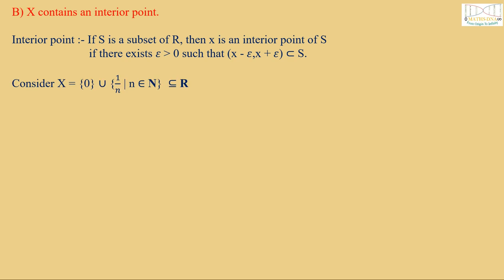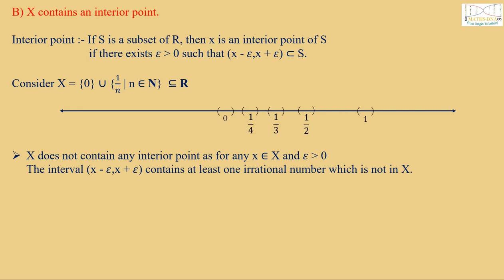Again, consider the same set X = {0} ∪ {1/n | n ∈ N} ⊂ R. We get this as a real line and X does not contain any interior point. As for any x ∈ X and ε > 0, the interval (x - ε, x + ε) contains at least one irrational number which is not in X. Therefore, B is also false.